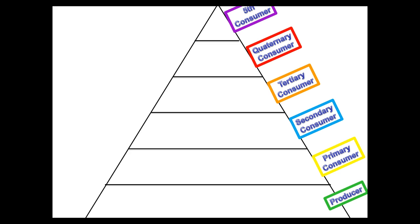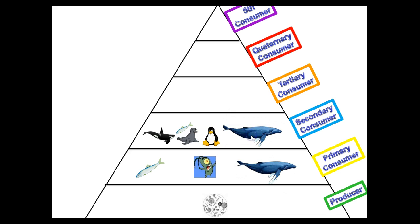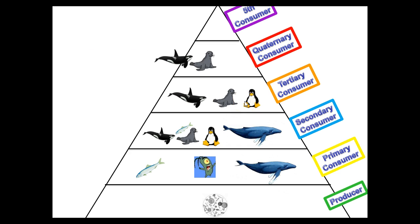Now let's put these onto the food pyramid. Write down the names — don't take the time to draw pictures. Our producer: we only had one — the phytoplankton. Primary consumers: we had three — the herring, zooplankton, and the baleen whale. Secondary consumers: the orca, herring, leopard seal, penguin, and baleen whale. Tertiary consumers: the orca, seal, and penguin. Quaternary consumers: the orca and the seal. Our top fifth-level consumer is the killer whale, the orca. Pause if you need to refer back to your food web picture.